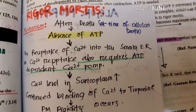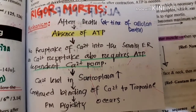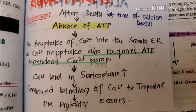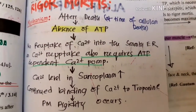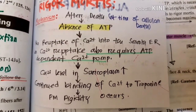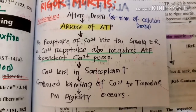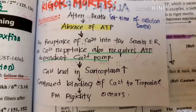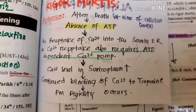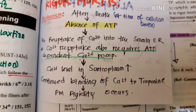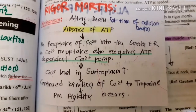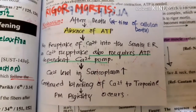When we are dead, at the time of cellular death — when the cell is dead — what happens is ATP becomes absent and is lost. If ATP is not present, then there is no reuptake of calcium into the smooth endoplasmic reticulum, because calcium reuptake requires an ATP-dependent calcium pump. Without ATP, the ATP-dependent calcium pump cannot function.